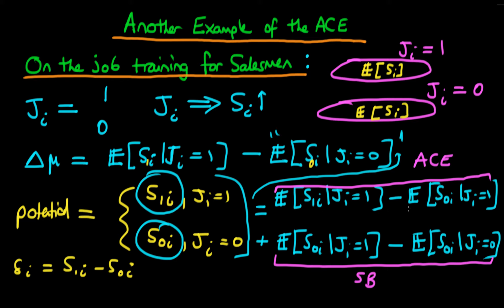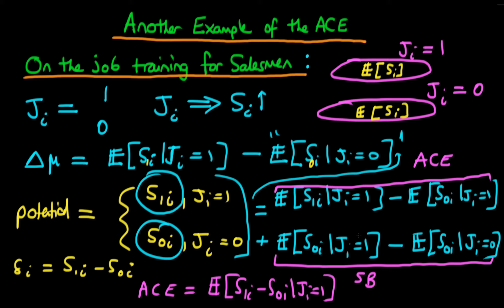Why does this top expression represent the average causal effect? Well, conditional on ji, we can rewrite it as the expected value of s1i minus s0i given ji equals one, because both expressions have the same conditioning and can be combined. This represents the delta_i we talked about — the only difference being that we're conditioning on being in the treated group, so this technically refers to the average causal effect on those which were treated. We expect the average causal effect of on-the-job training to increase the level of sales, so we expect the average causal effect is greater than zero.